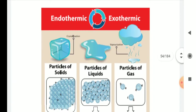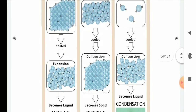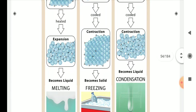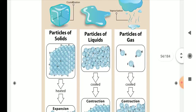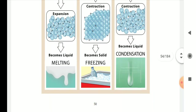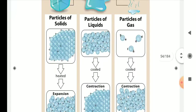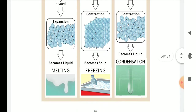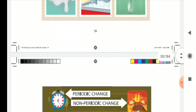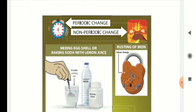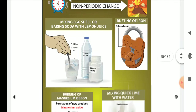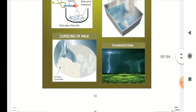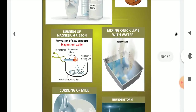We have already seen endothermic and exothermic changes. In physical states: solid expands with heat, liquid melts from solid, liquid cools to solid freezing, gas condenses to liquid — condensation. Periodic or non-periodic — we have covered the indications for all of these topics.